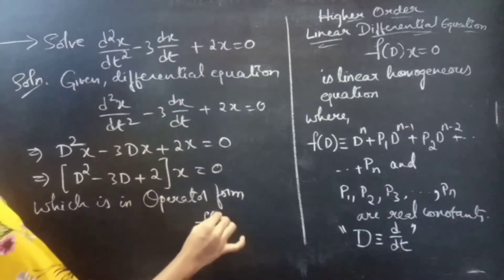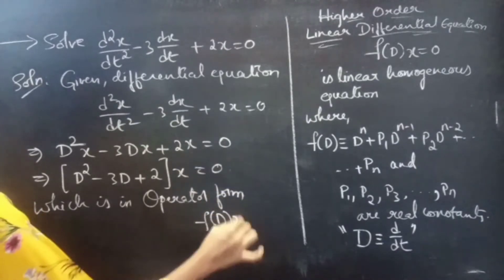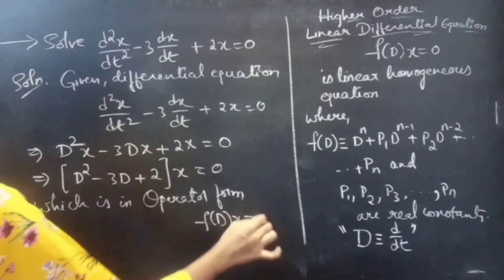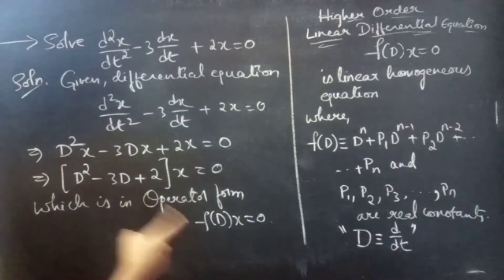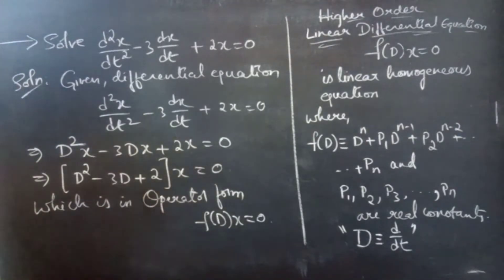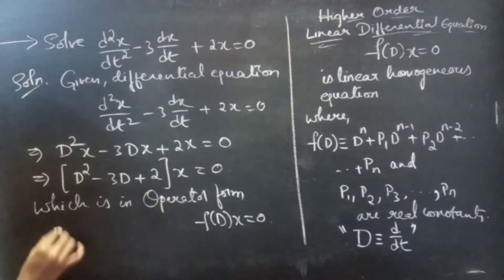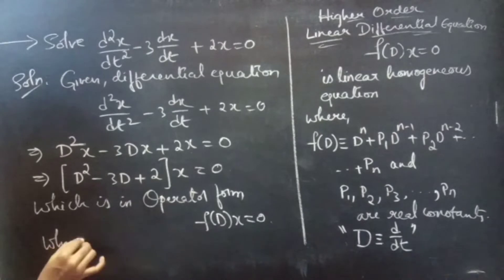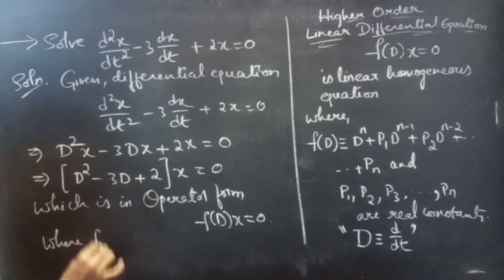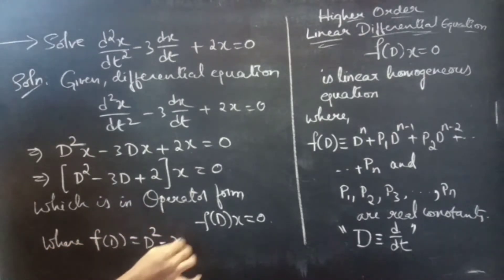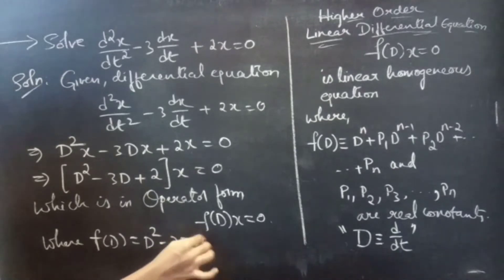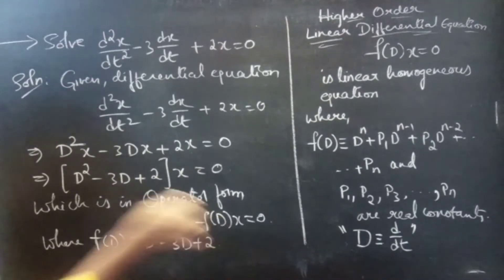This gives us f(D) times x equals 0, where f(D) equals D² minus 3D plus 2.